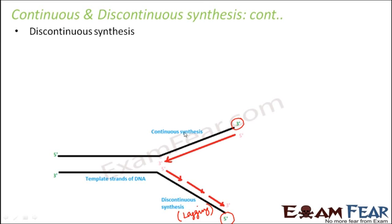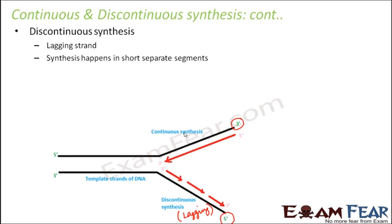This is where the need for enzyme primase arose. DNA polymerase cannot initiate the process on the lagging strand, so something else was needed to provide a free 3' hydroxyl group. That is done by the enzyme primase. Primase will initiate the process by creating a small RNA segment called an RNA primer. Once the RNA primer is created, a free hydroxyl group is made available to DNA polymerase, which can then add free nucleotides to the RNA primer, forming a small fragment of the new DNA.